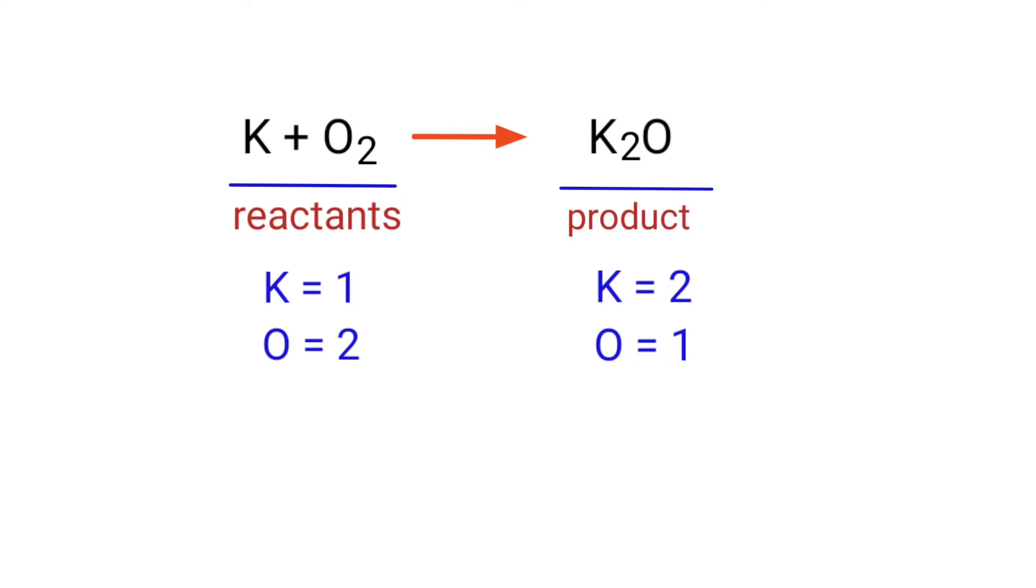The number of atoms are not balanced on both sides. To balance the chemical equation we need to make use of coefficients. A coefficient is a number that we place in front of a chemical formula.